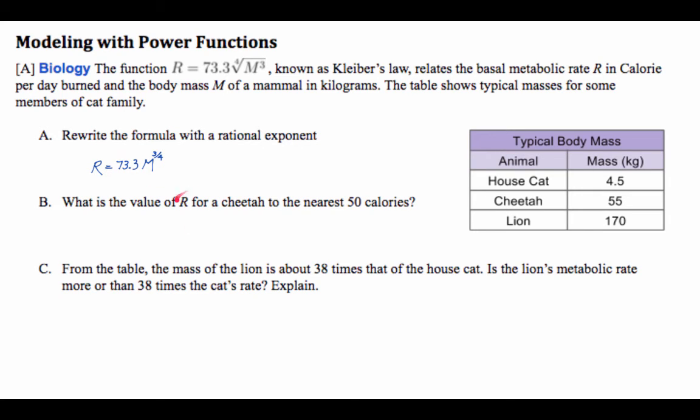And then to find the R value, the metabolic rate for cheetah to the nearest 50 calories, we simply plug in the mass of 55 kilos into the equation and put that in the calculator. It actually comes out to 1,480.39, but to the nearest 50 calories, that's 1,500. So it's burning 1,500 calories per day.